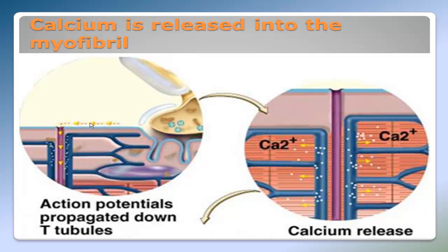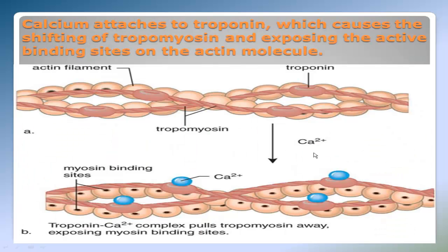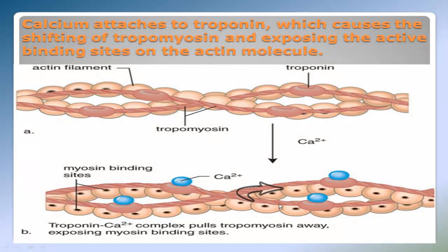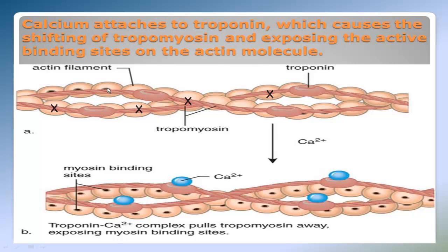That action potential travels down the T-tubules and causes calcium to be released into the myofibril. Once calcium is released, it attaches to troponin, which causes the shifting of tropomyosin and exposes the active binding sites on the actin molecule. Looking at the top actin filament, the tropomyosin — the red rope-like structure — blocks the active binding sites on the actin filament, so there are very few active binding sites visible.